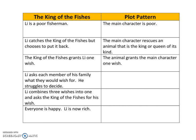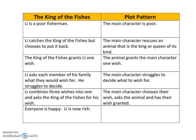In the original text the king of the fishes grants Lee one wish — so in our plot pattern, the animal grants the main character one wish as a reward for the rescue. Next, Lee asks each member of his family what they would wish for and struggles to decide. So our plot pattern shows the main character struggling to decide what they want. Then Lee comes up with the ingenious idea of combining all three wishes into one, asks the king of the fishes for that wish, and the animal grants it.